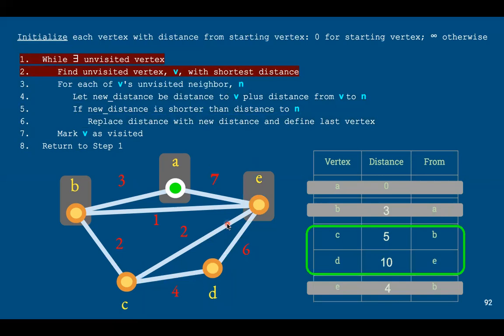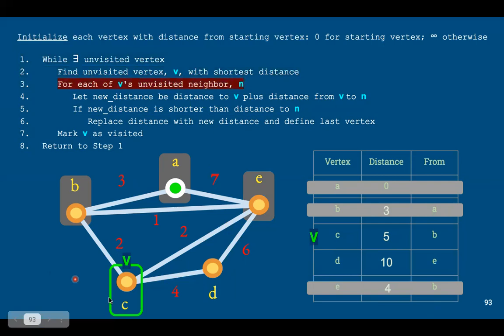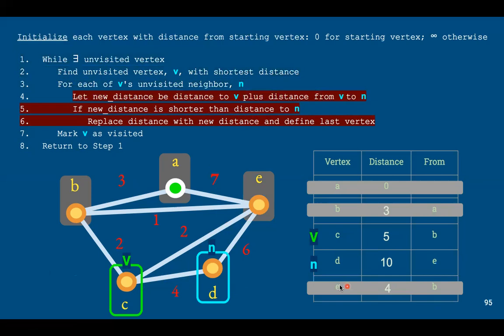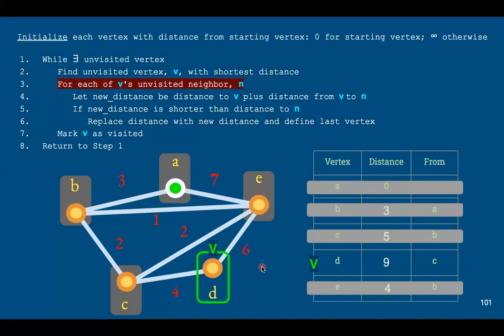We go again to look for the shortest distance in our remaining unvisited vertices. That would be C, and C has one neighbor, D. We see whether the distance from C to A, which is five, and the distance from D to C to use that sub-path, which is four—the sum of that is better than the current distance for D, which is ten. Nine is shorter than ten, so we replace ten with a nine, and we change the vertex to C. We go to the last vertex D. It doesn't have any unvisited neighbors, so that's done, and this routine is over.